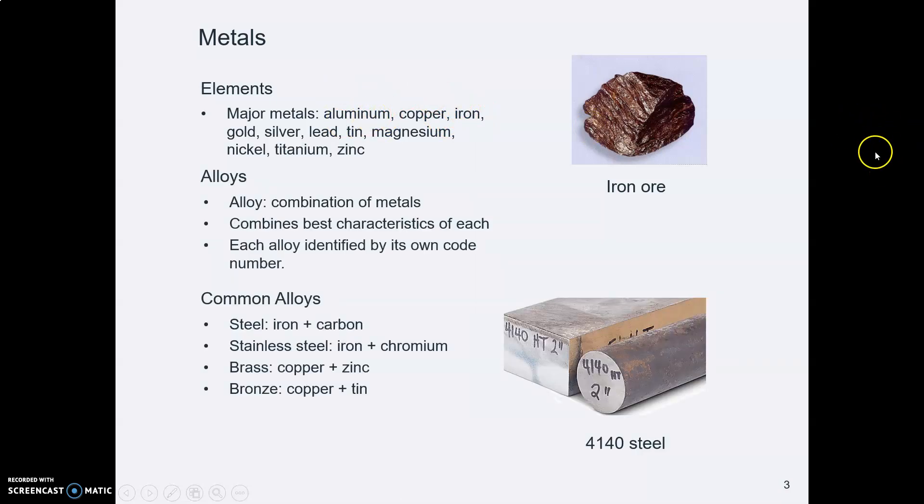An alloy is something that combines elements. So, for example, steel is an alloy because it combines the element iron and the element carbon and some other stuff.